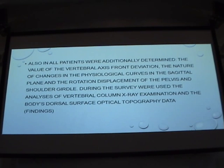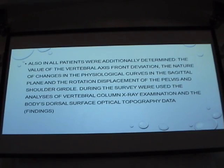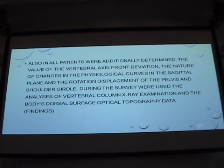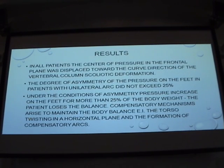Patients also underwent additional examinations including assessment of vertebral axis deviation, changes in physiological curves in the sagittal plane, rotational displacement of the pelvis and shoulder girdle, analysis of vertebral column X-ray examination, and optical topography of the body's dorsal surface. These were mainly used for patient selection when creating the examination groups.